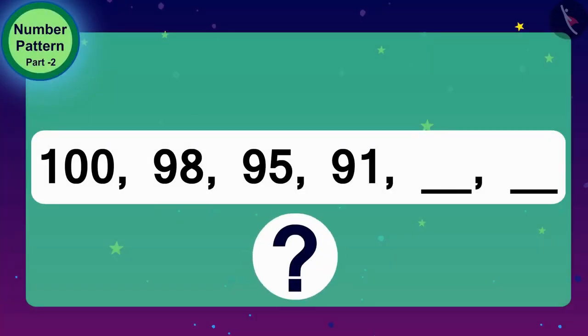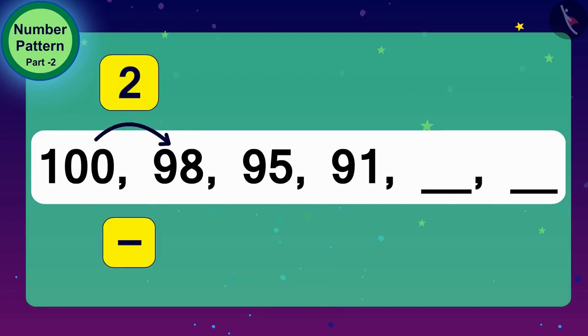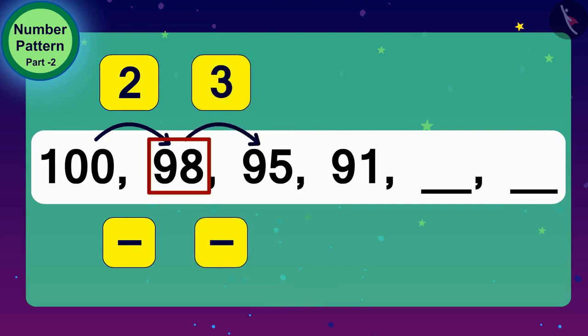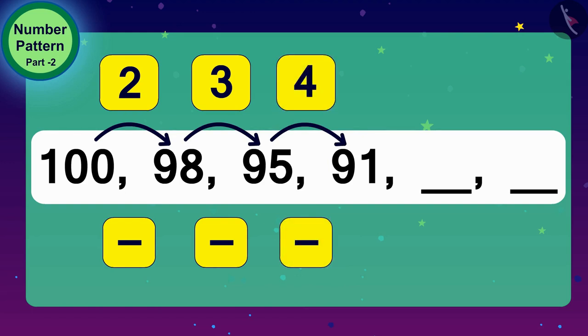What do we have to do to get 98 from 100? Yes, we have to subtract 2 from it. And what will we do to reach 95 from 98? We will subtract 3 points from 98. Now, what do we have to do to get 91 from 95? Alright, we have to deduct 4 from 95.